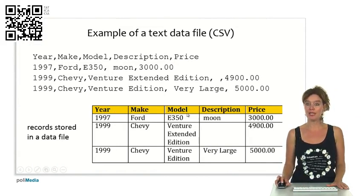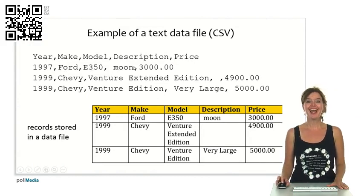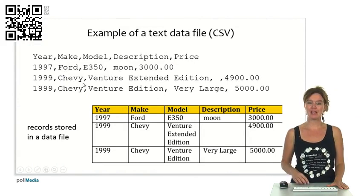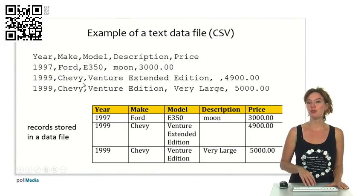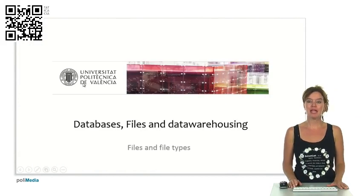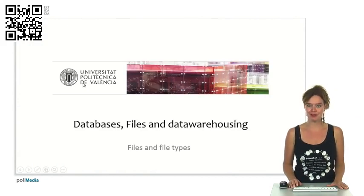Here you see the different rows that contain values. It's a 1997 Ford which has this model. The description is that it's probably been to the moon, and the price is $3,000. Here you see the other two rows. So this is an example of a data file that represents a table but is a plain text file. In the next part, we'll look at binary files.